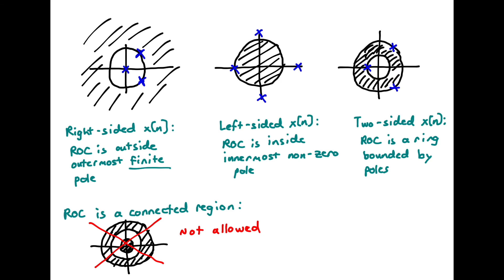Two-sided sequences have an ROC that is a ring bounded by poles — the innermost pole defines the inner boundary and the outermost poles define the outer boundary. A two-sided sequence is essentially the sum of a left-sided and a right-sided sequence. Finally, the ROC must always be a connected region; we cannot have two separate rings. The ROC is the intersection of the convergence regions associated with each individual pole.